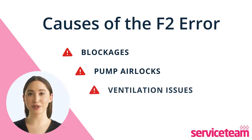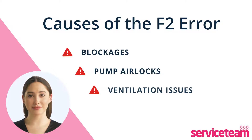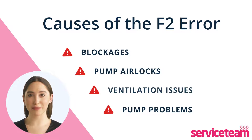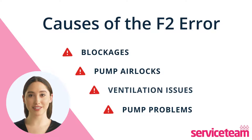A ventilation issue is another cause of the F2 fault code. Poor ventilation or a blocked flue can limit air intake, affecting combustion. Incorrect installation or malfunctioning pumps can also hinder water circulation. If your boiler isn't working after a recent service or installation, it might be due to improper pump installation. The boiler won't operate until the pump is properly aligned for water circulation.